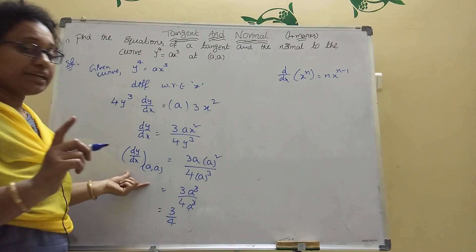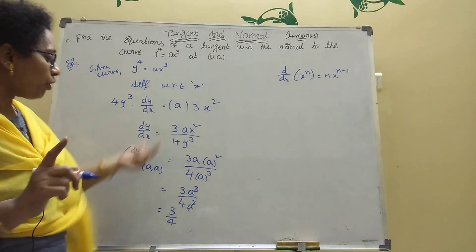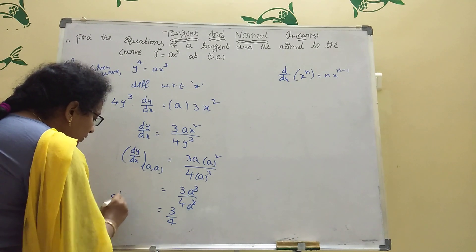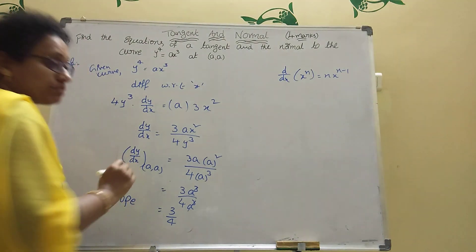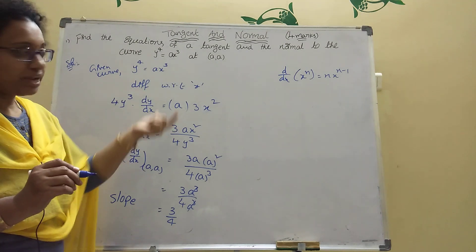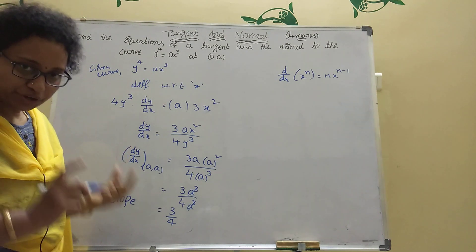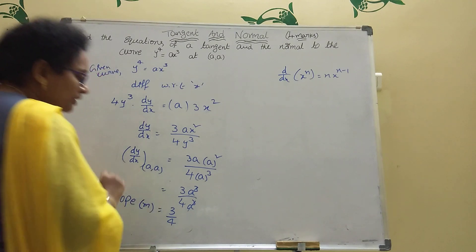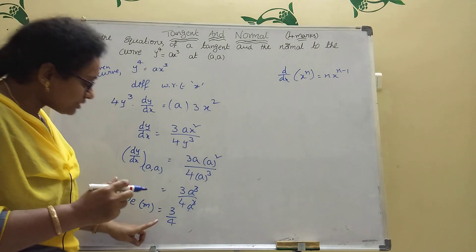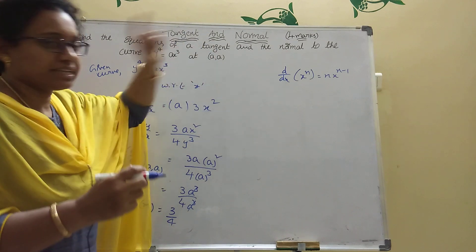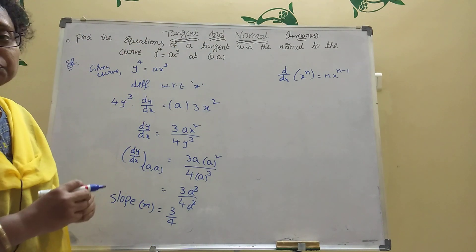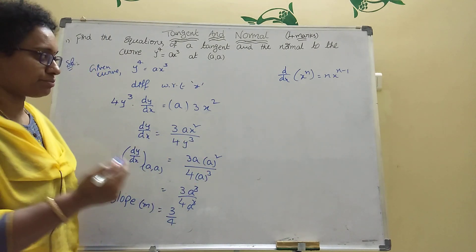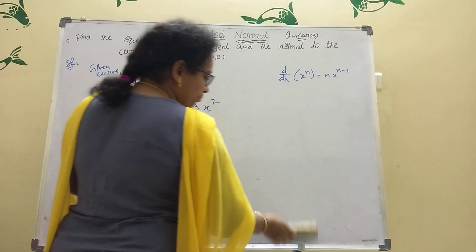Whenever the derivative is applied at the given point, that is called the slope m. Slope means the derivative of the given curve at that point. m = 3/4. Now we have slope and one point, so we use the equation of the tangent formula: y - y₁ = m(x - x₁).